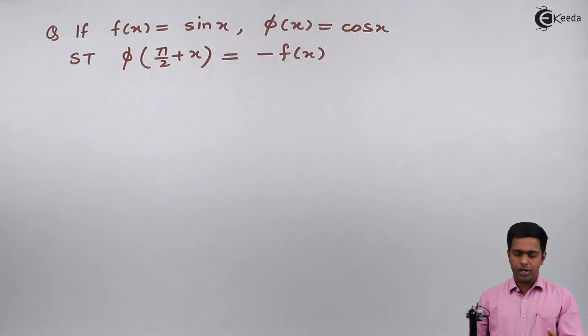Now here we have been given two transcendental functions and we have to prove φ(π/2 + x) equals -f(x). So to prove this, we have two functions: on the left-hand side we have φ(π/2 + x) and on the right-hand side we have f(x).